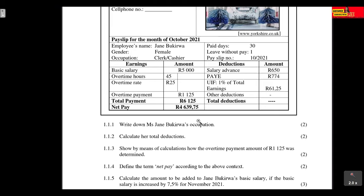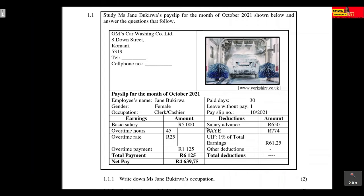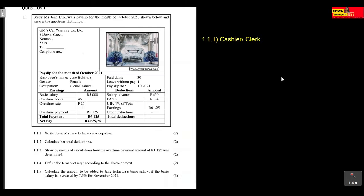We've analyzed the pay slip and are ready to look at the questions. Question 1.1.1 says: write down Miss Jane Bukiwa's occupation. This one is straightforward — we already know that Miss Jane Bukiwa is a clerk or a cashier, so we write that down. Miss Jane Bukiwa's occupation is a cashier or a clerk.